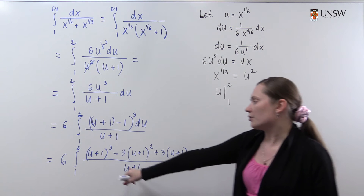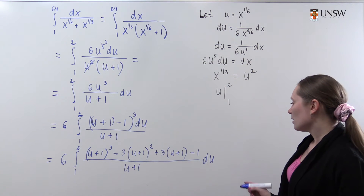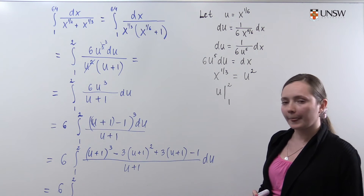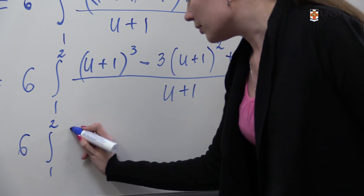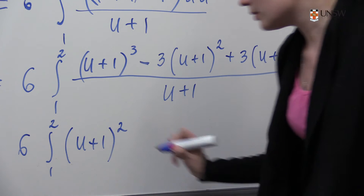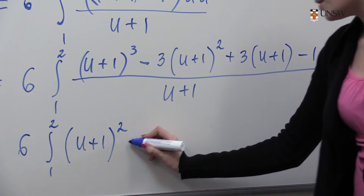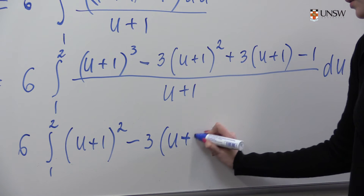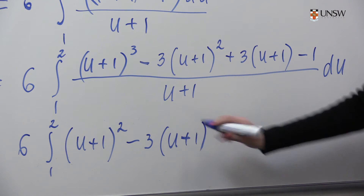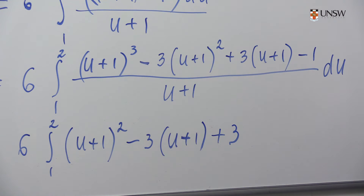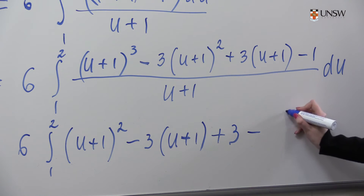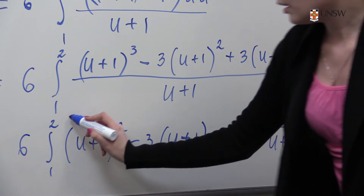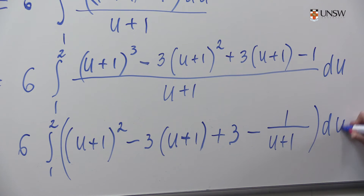Dividing every term by (u plus 1), we obtain 6 times the integral from 1 to 2 of: (u plus 1) squared minus 3(u plus 1) plus 3 minus 1 over (u plus 1), all du. Now we integrate every term separately.